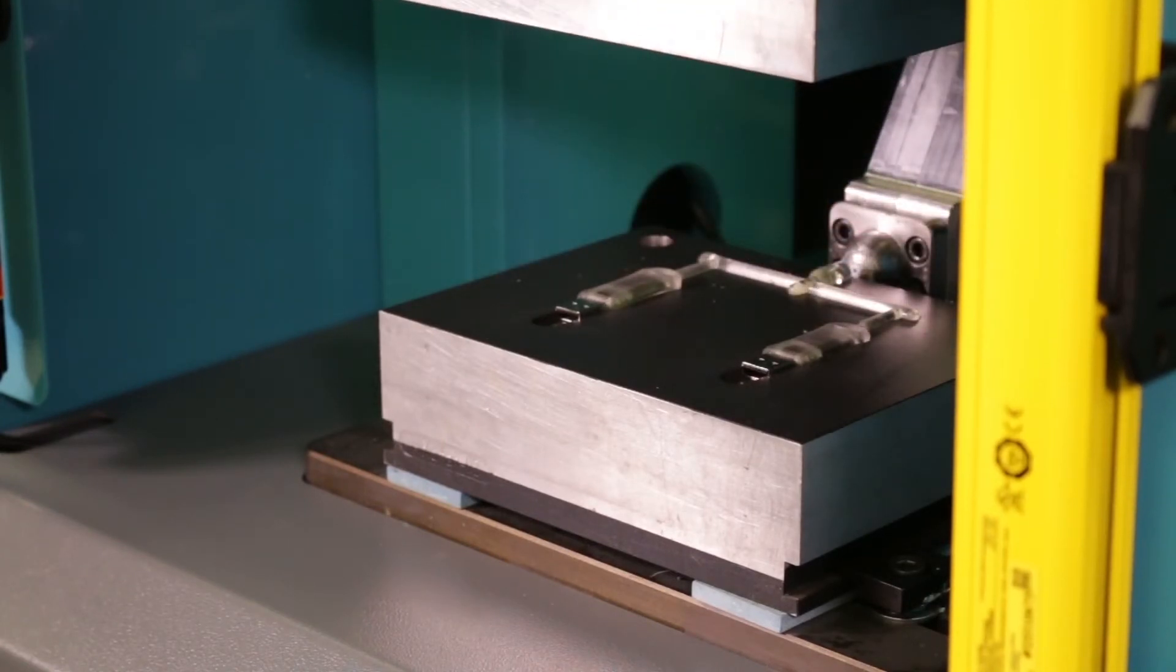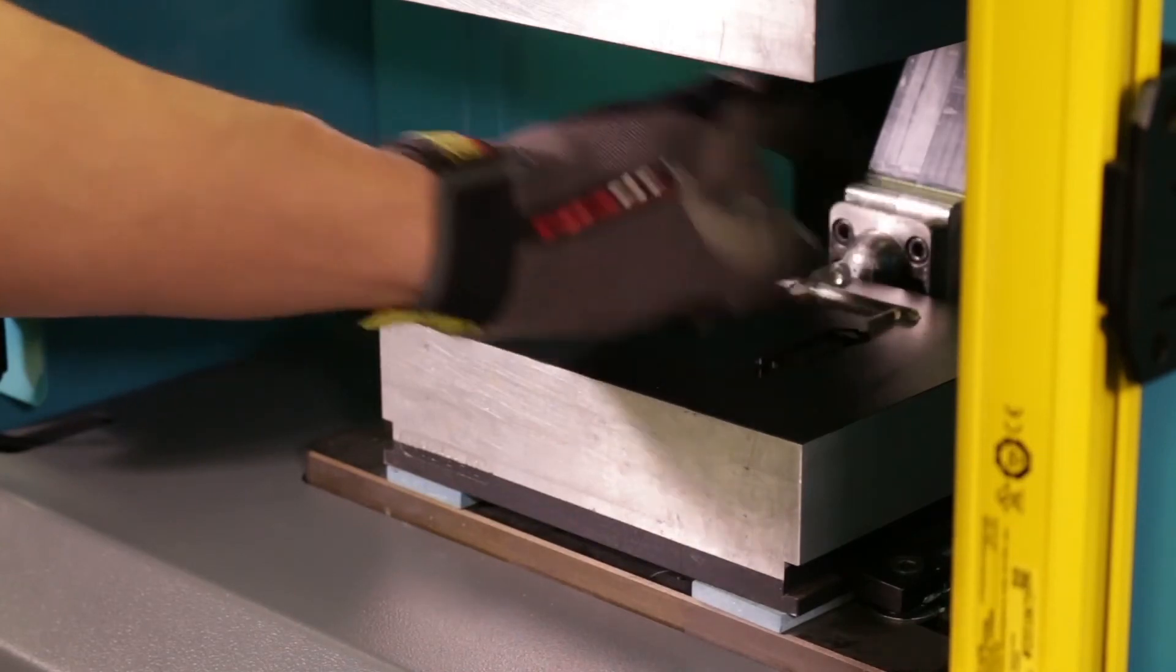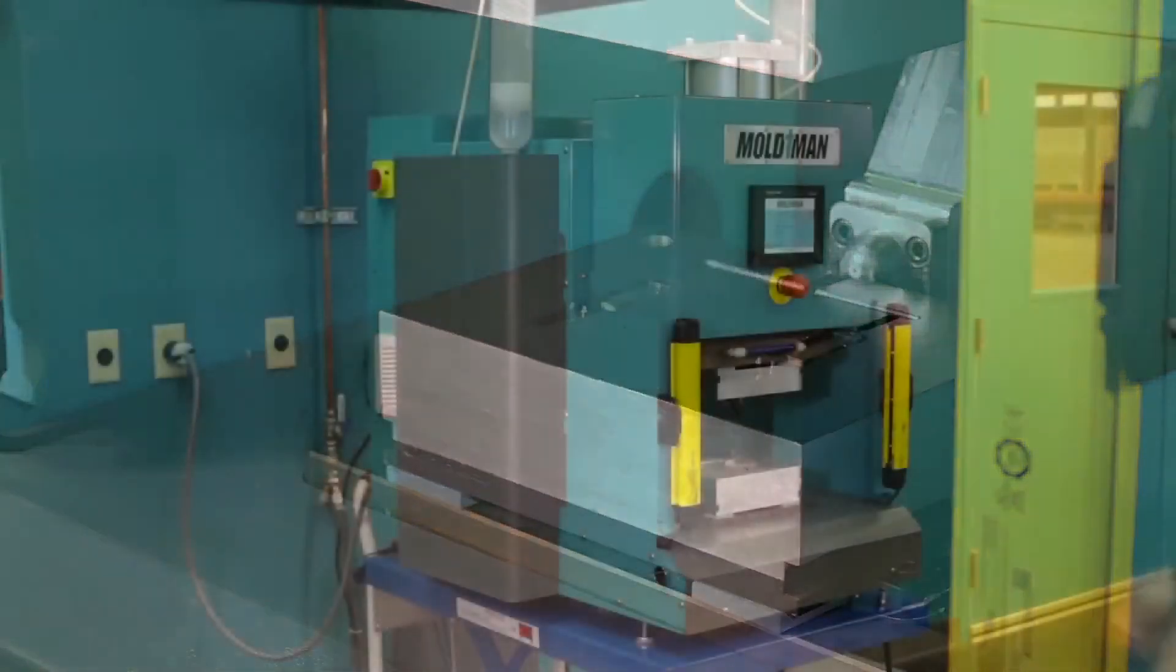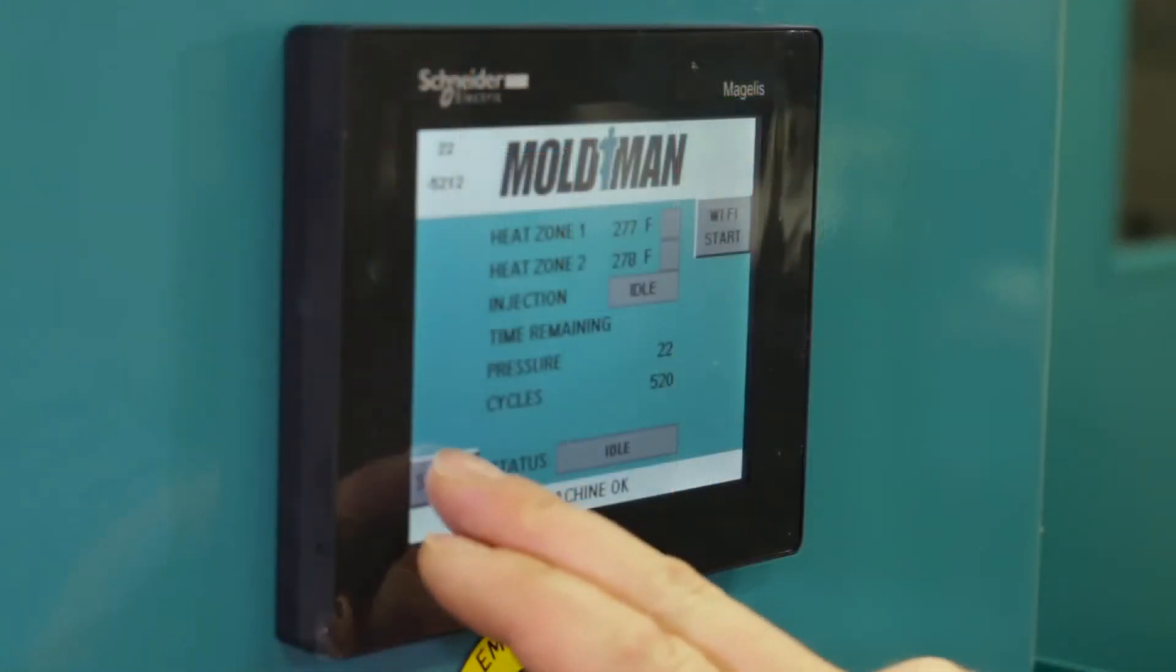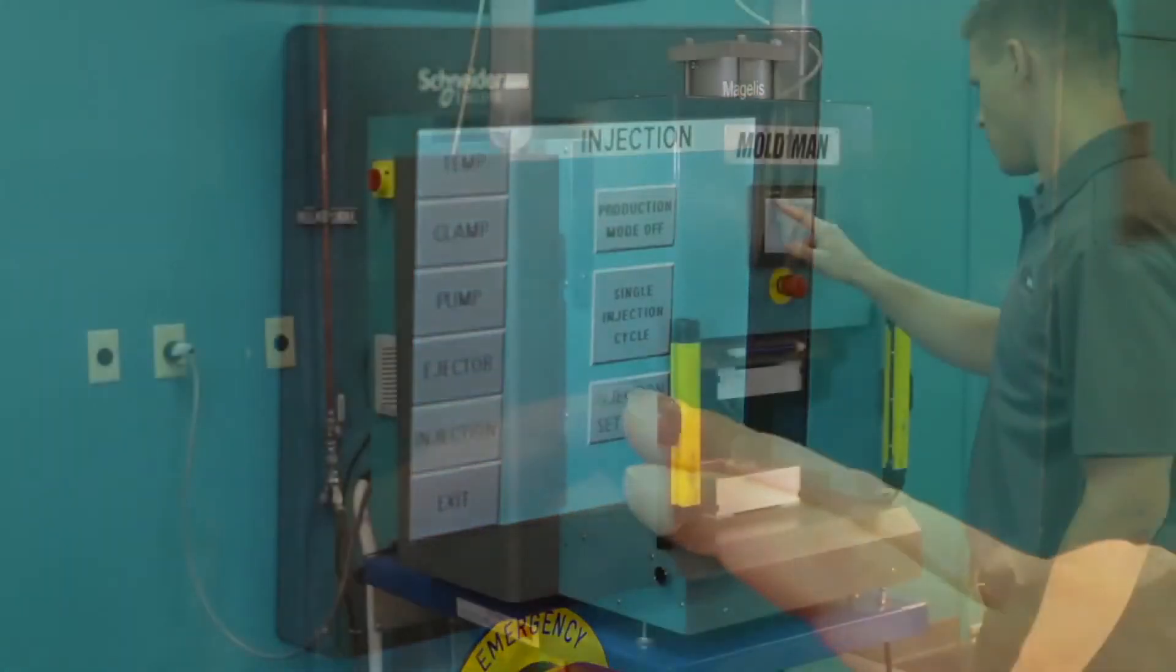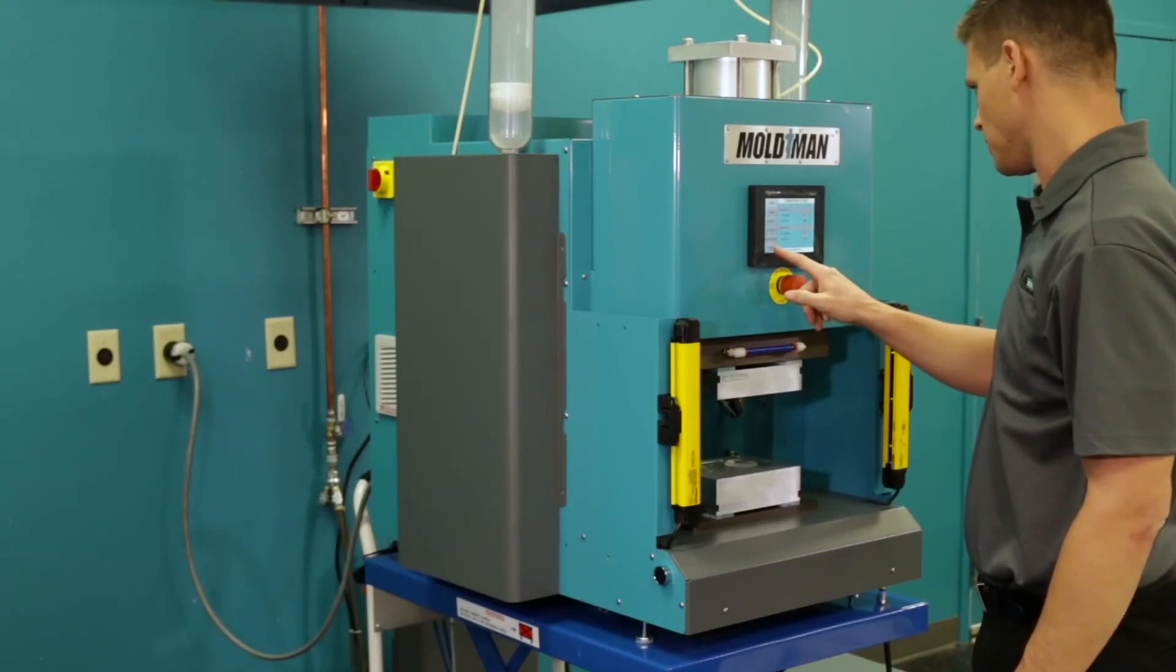The Moldman 2050 is easy to operate with only a few steps and can be used with single or multi-cavity mold sets. An intuitive LCD control screen provides full control and monitoring of temperature, pressure, specific gravity values, and two-part material ratios.